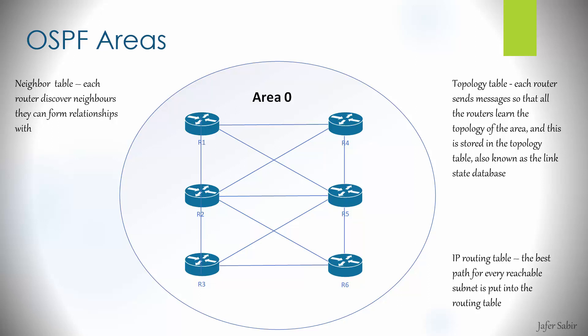Routers exchange information by flooding link state updates to all routers in the area, advertising their links via link state advertisements (LSAs). This information is stored in each router's link state database, which is used to build the topology map. This flooding happens every time a change occurs — such as a network going down or a new network being added — and periodically to ensure everyone stays in sync.